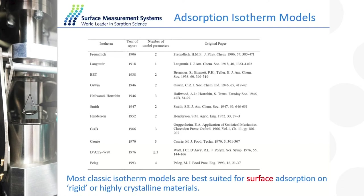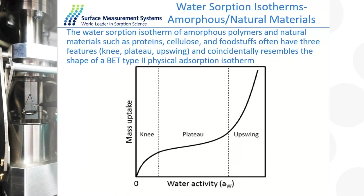In a DVS environment, these models are typically applied when looking at rigid materials like oxides, alumina, silica, or activated carbon — or a highly crystalline material where water is only laying on the surface and is not partially soluble in the material. When dealing with natural materials, amorphous materials, or foodstuffs, particularly with water, these materials will often get a significant amount of bulk absorption in addition to surface adsorption.